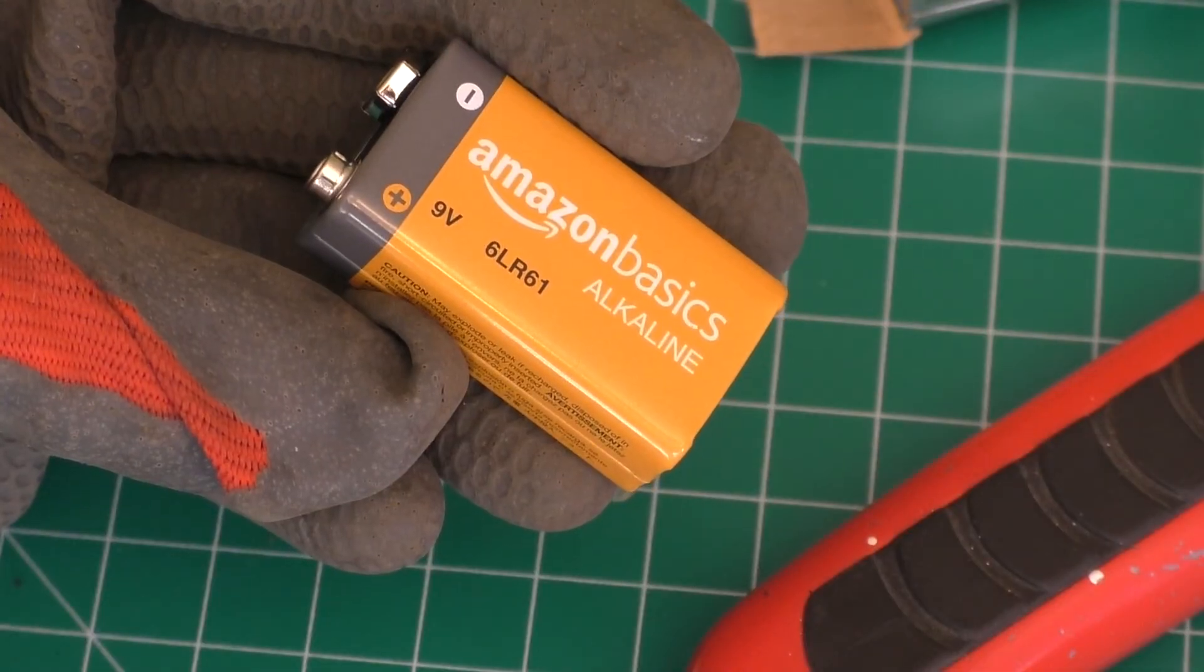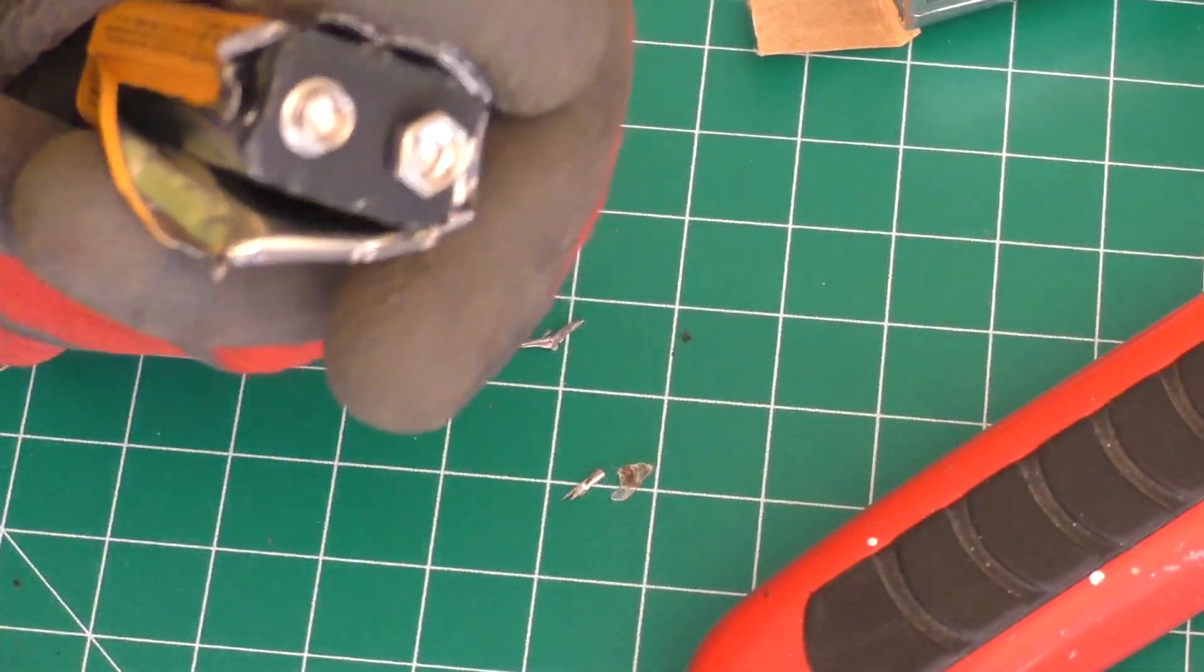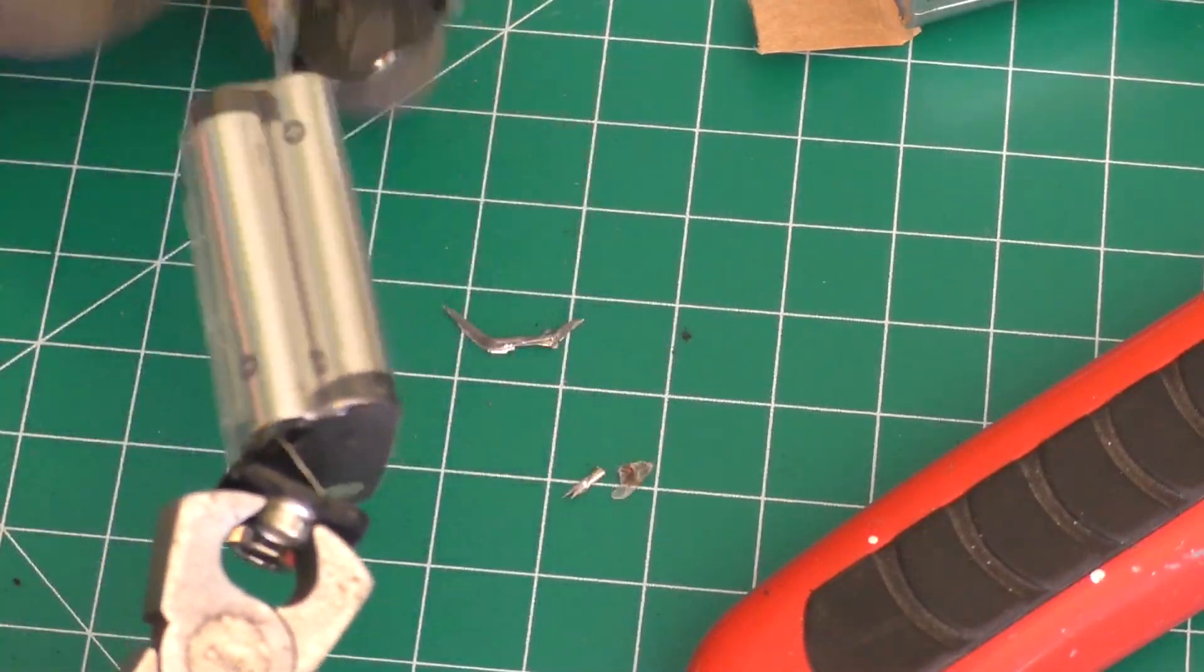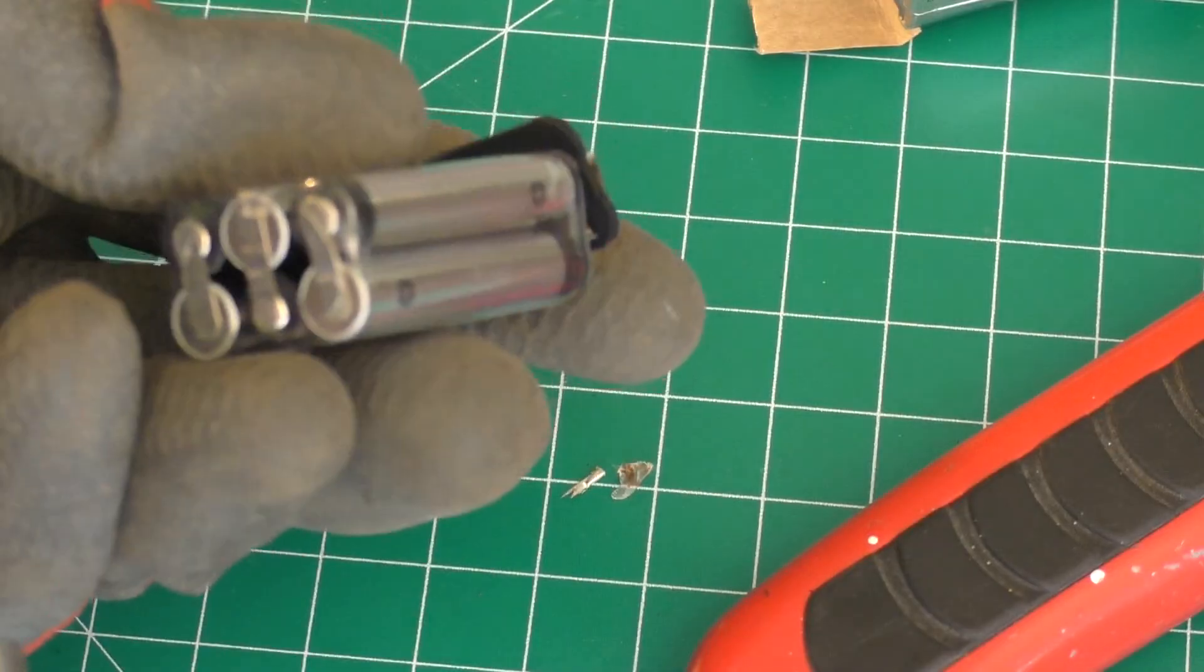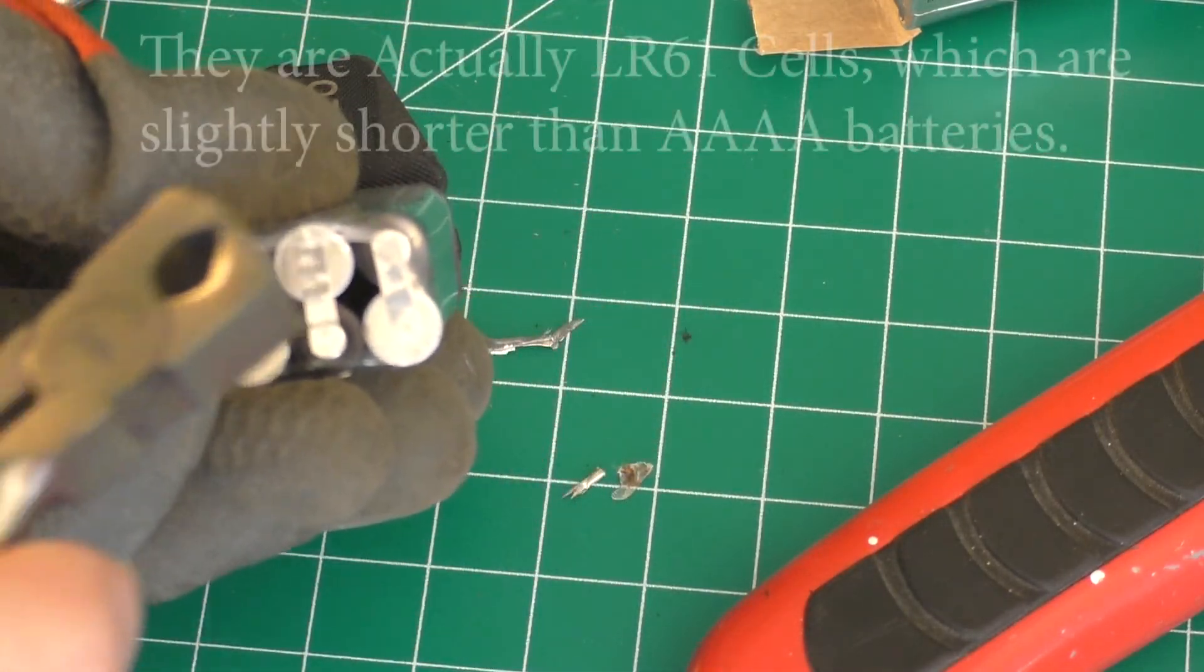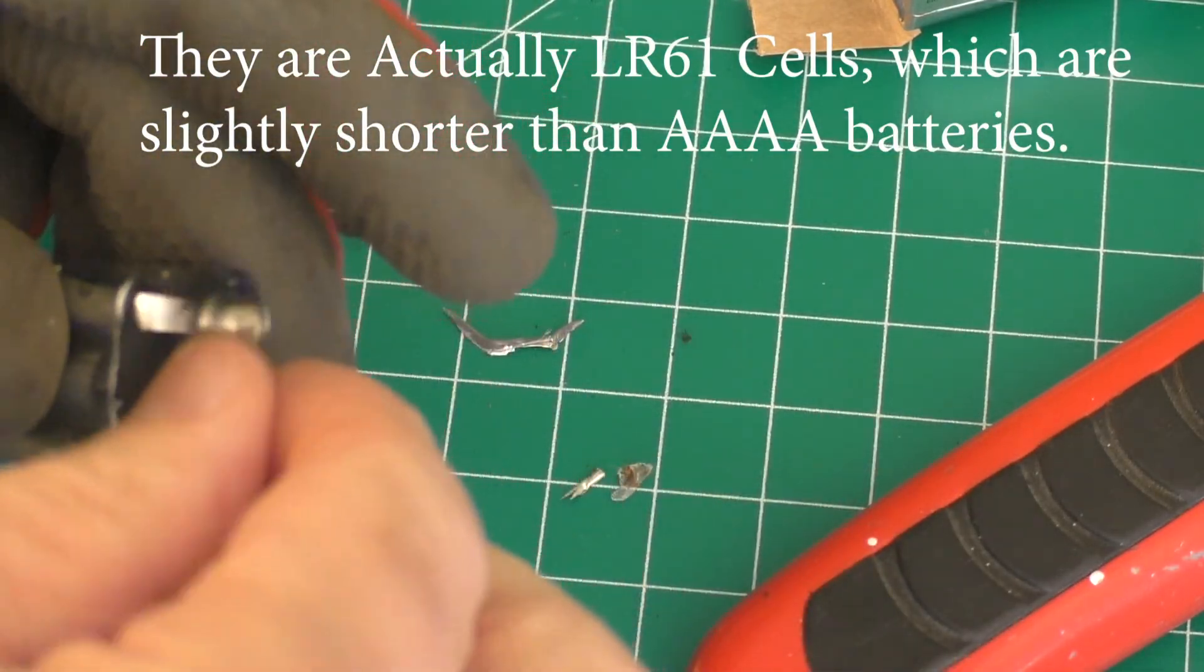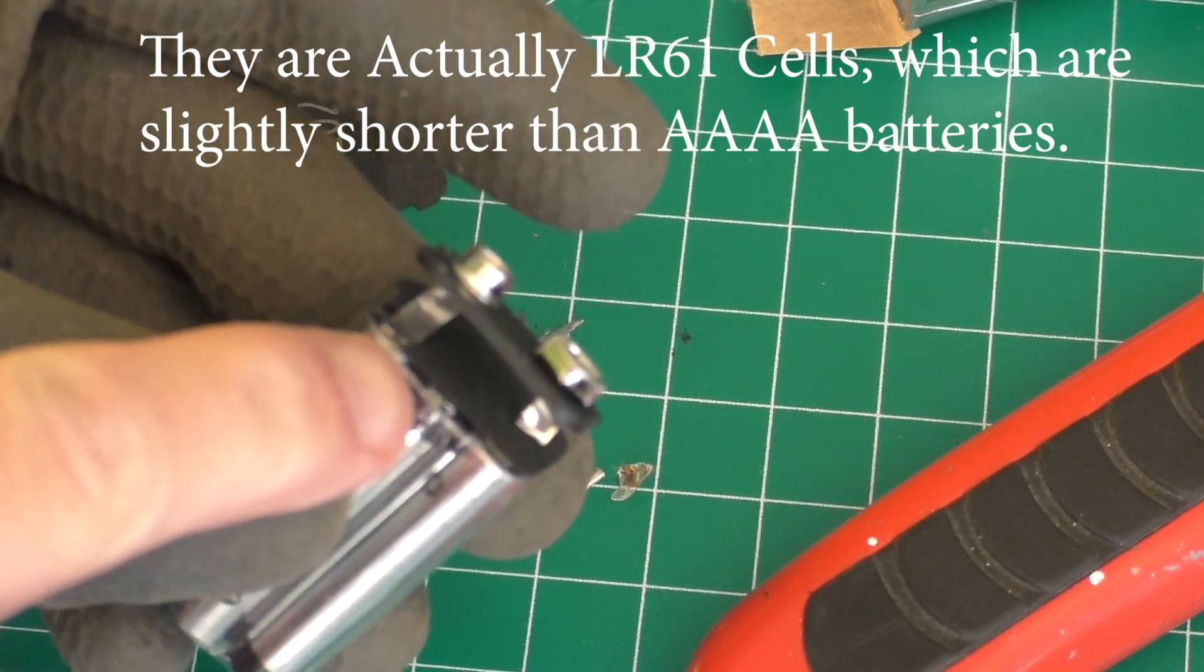So let's go ahead and open up one of the other ones and see if they're the same. So let's go ahead and try the Amazon Basics next. Now this looks a little bit different. Let me see if I can get this off. Oh wow, this is considerably different. So this looks like it's more like almost traditional AAA batteries stacked together. And you can see, let's take this top one, you can see the negative and positive terminals there.